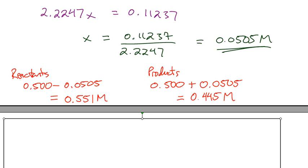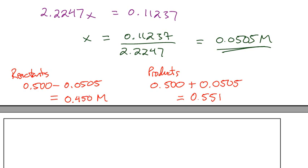The products were 0.500 + x. After recalculating: 0.500 − x gives approximately 0.449, and 0.500 + x gives approximately 0.551. Sorry for the confusion — the reactant equilibrium concentration rounds to about 0.450 and the product to 0.551. Three significant figures is the final answer. Aside from some arithmetic fumbles, that's how you do this type of ICE table.